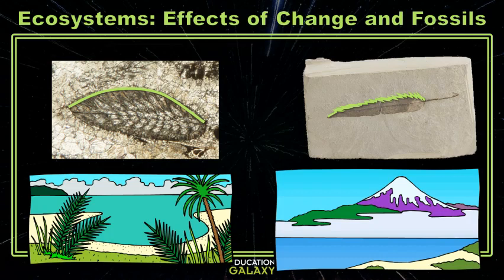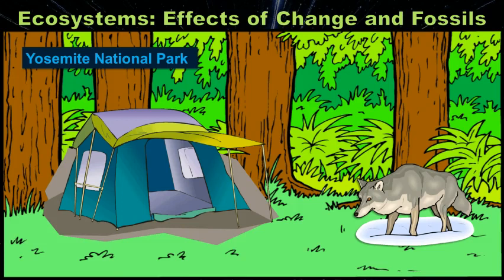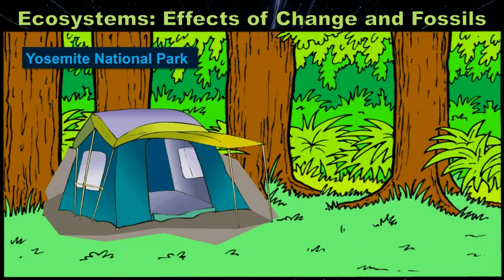A lot of times change in an ecosystem is caused by living things. Let's take a look at Yosemite National Park. This is a popular camping and hiking location that used to be home to a lot of wolves. But since human travelers are afraid of wolves and being attacked, the park got rid of all of the wolves in the park.